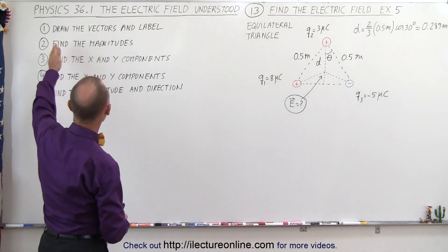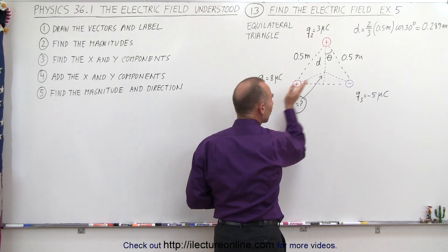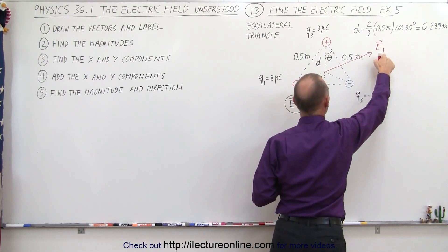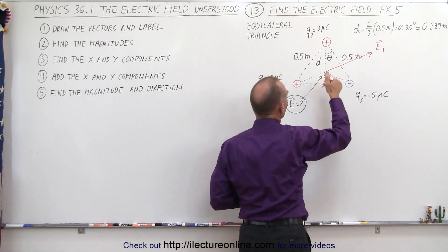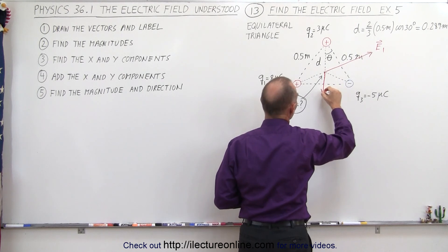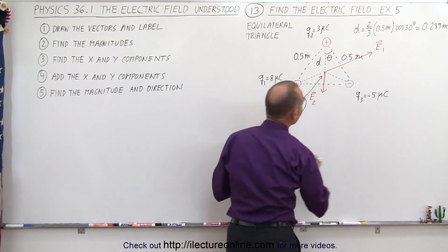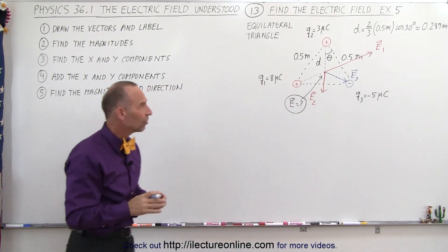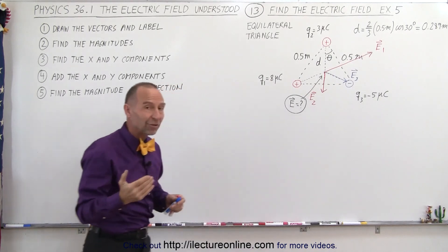Now let's start with step one: draw the vectors and label. We find the electric field at this location caused by Q1, which points away from the charge — that's vector E1. For Q2, it's also away from the charge, in this direction, and it's a smaller vector because it's a smaller charge. The distance for each is always the same. That's E2. And vector E3 points toward Q3 because it's a negative charge. So we have three vectors: E1, E2, and E3.